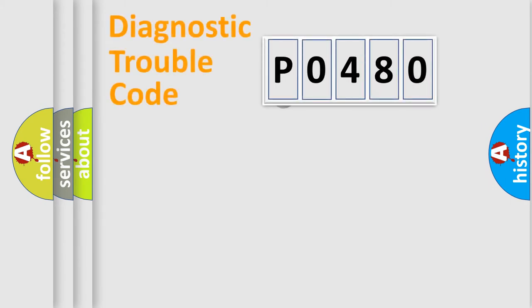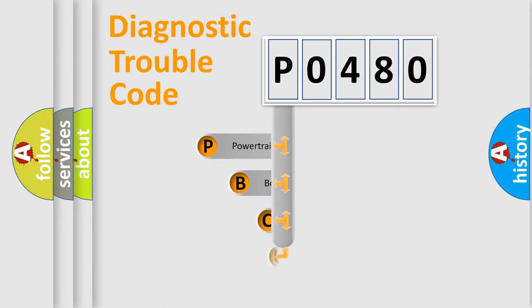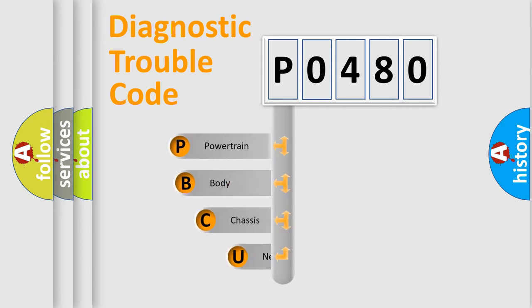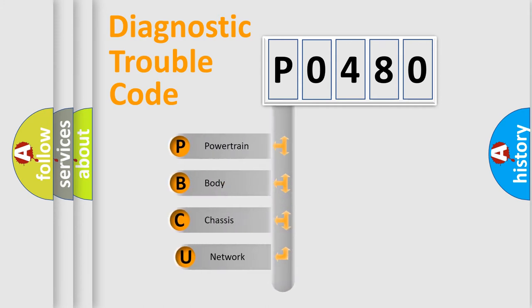First, let's look at the history of diagnostic fault code composition according to the OBD2 protocol, which is unified for all automakers since 2000. We divide the electric system of an automobile into four basic units.